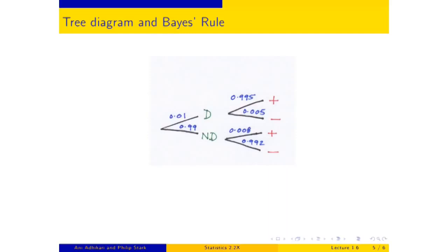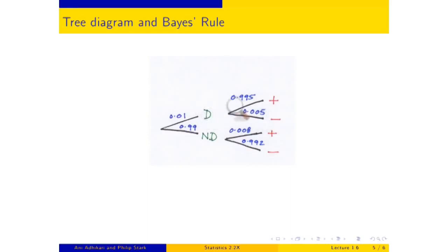In the diagram: disease or not disease — 1% and 99%. Given that somebody has the disease, the chance that they test negative (an error) is 0.005, and therefore the chance that they test positive is 0.995. If they don't have the disease, the chance that they test positive (false positive) is 0.008, and correspondingly the chance that they test negative given no disease is 0.992.